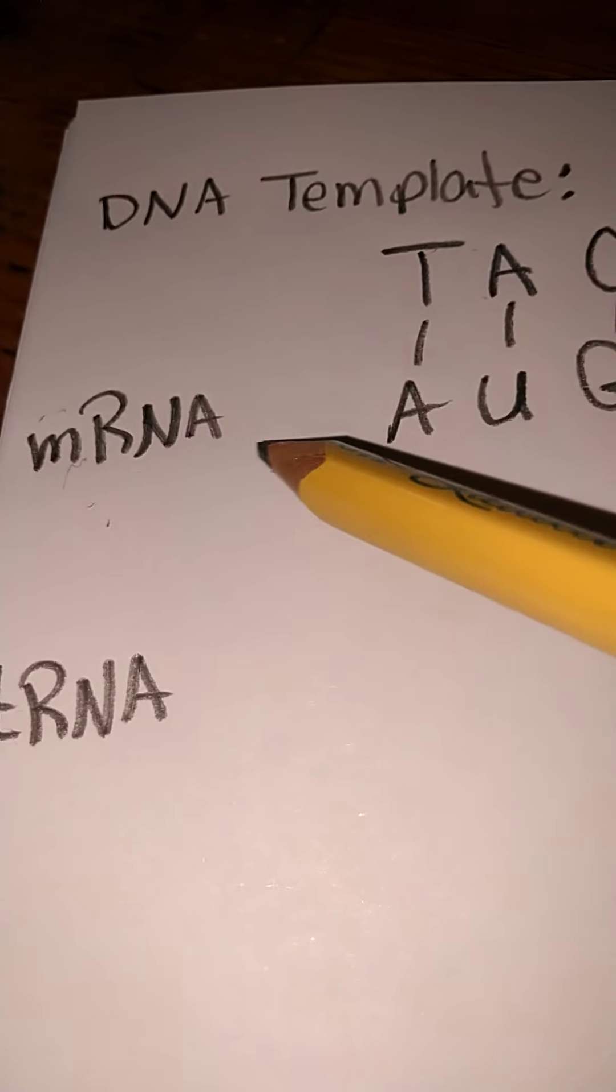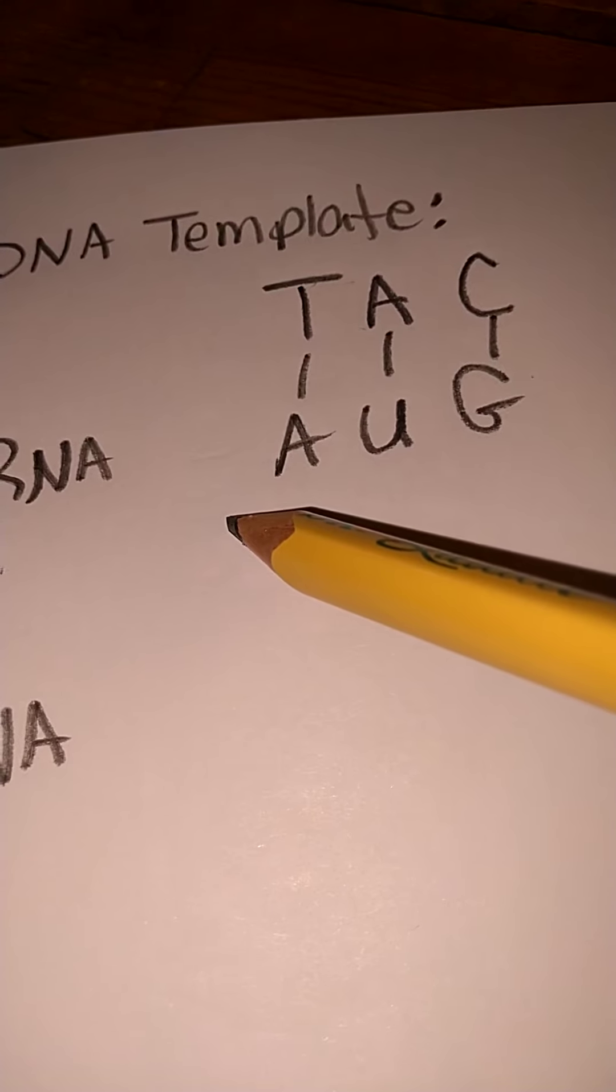These are our codons. This is carrying that code from our DNA out to our ribosomes. These are called codons, mRNA codons. We're going to take our codons to the codon wheel. It's going to tell us which amino acids we need. So if our mRNA is our codon, that's what we take to our codon wheel or our codon table.